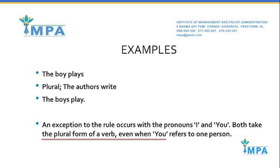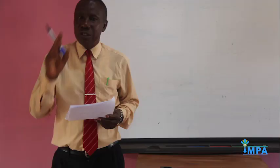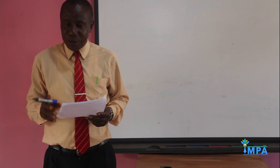An exception to this rule occurs with the pronouns I and you. Both take the plural form of the verb even when 'you' refers to only one person. If I say 'you,' it can be you plural or you singular.